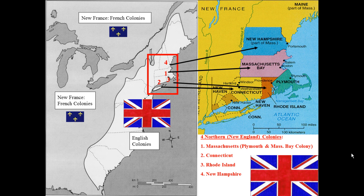The next section of notes are on the northern colonies, also known as the New England colonies. Those colonies include Massachusetts, which was made out of Plymouth and the Massachusetts Bay Colony, number two Connecticut, Rhode Island, and New Hampshire. You're familiar with all of these names because they are states that border our state today. Notice on the map the English colonies are all 13 colonies on the east coast, and north and west are French colonies, the colony of New France.